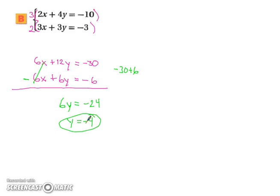So same as before, once you have one variable, just substitute it in and get the other. So changing colors,